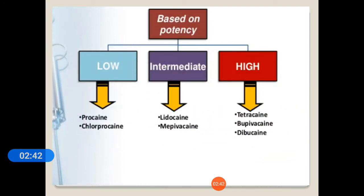This classification is based on potency. Procaine and chloroprocaine show low potency. Tetracaine, bupivacaine, and ropivacaine show high potency. Lidocaine and mepivacaine show only intermediate potency.